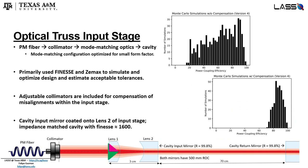One key aspect of the OTI is that we integrate a fiber injection, collimation optics, mode matching optics, and a cavity input mirror into a single input stage that we can mount onto the primary mirror of the telescope. All that is then left is to mount our cavity return mirror around the secondary mirror of the telescope. The bulk of the optical design work was centered around creating this optical truss input stage, using Finesse and Zemax to simulate and optimize the design to maintain a very compact mode matching configuration.